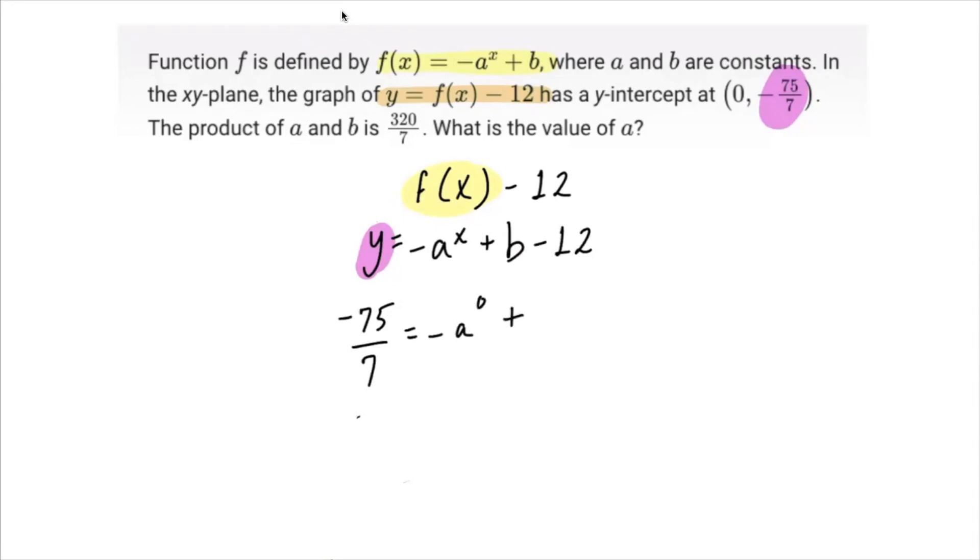Remember that order of operations tells us that first we have to do our exponents. So you're going to raise a to the 0 power. That gives you negative 1 plus b minus 12.